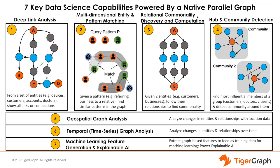Third is relational commonality discovery and computation. Given two entities, TigerGraph traverses their relationships to find commonality and thus similarity between the two. This is useful for finding common members or patients for a set of doctors, finding common customers for a set of merchants, and finding common business or personal connections among a group.